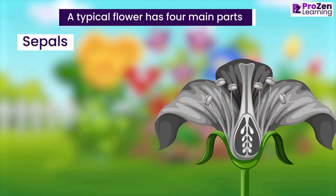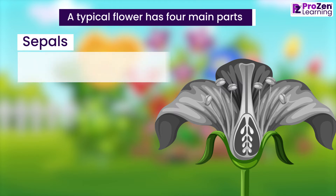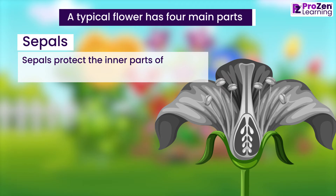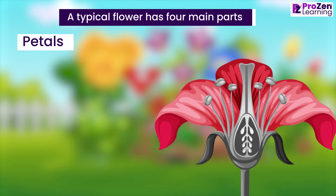Sepals are the outermost parts of a flower. They are mostly green and leaf-like. Sepals protect the inner parts of a flower before it blooms.